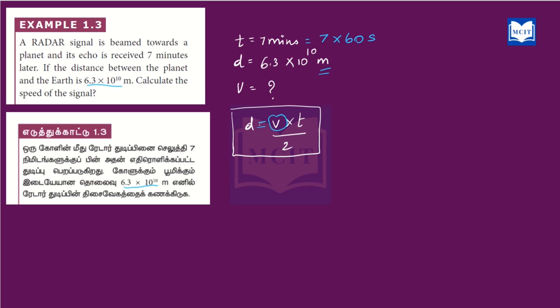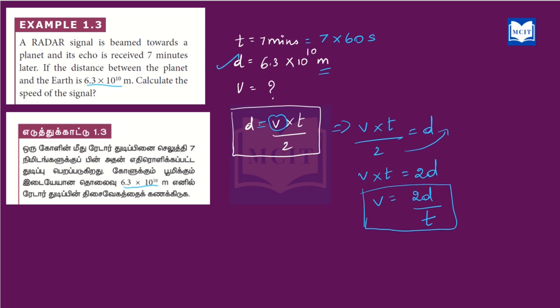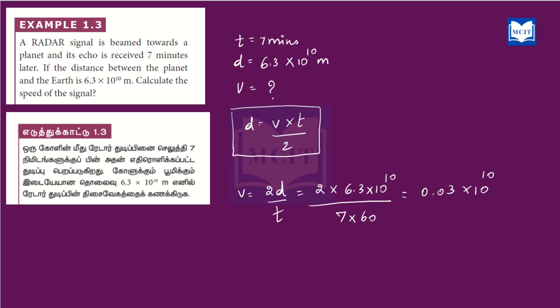We will derive the formula. This formula is: d equals v into t divided by 2. We need to solve for v, so rearranging: v into t equals 2d. Therefore, v equals 2d divided by t. In this formula we will substitute the d value and t value to find v.